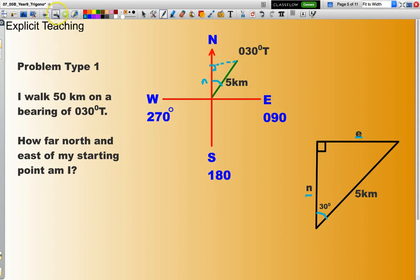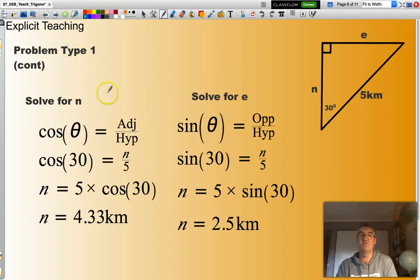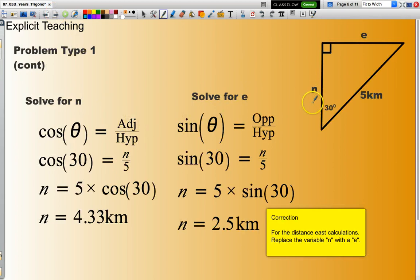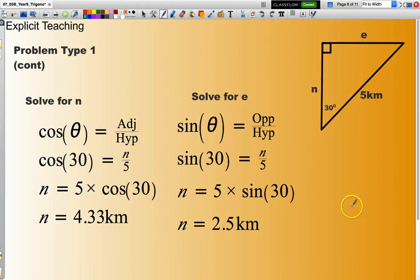Now, the maths associated with that is just some straightforward trigonometry. To work out north, I will be using cosine of theta. And these are all the steps. You can just read your way through those. And if I'm looking at the east direction, these are the steps here through sine theta. So, just pause the video for a second, have a look at the maths, make sure it all makes sense. And I will move on to problem type 2.